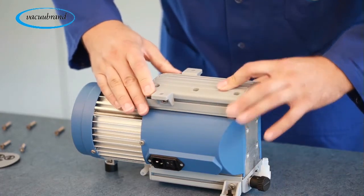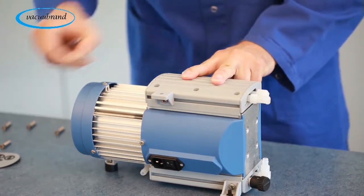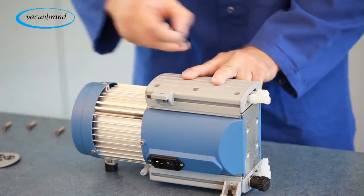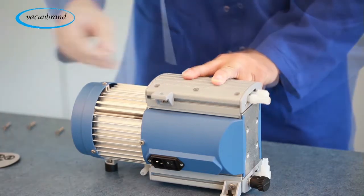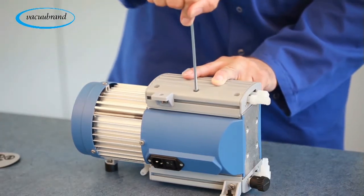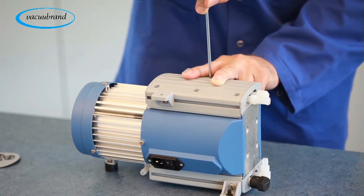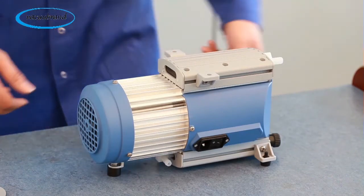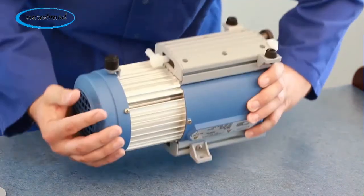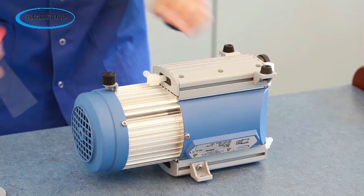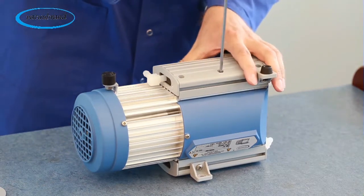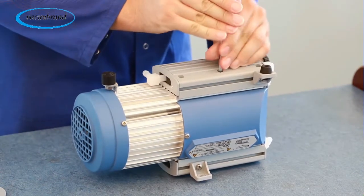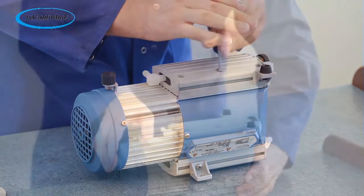Place the housing cover back into position and secure with the screws. Repeat this diaphragm service process for the adjacent diaphragm assembly on the other side of the pump.